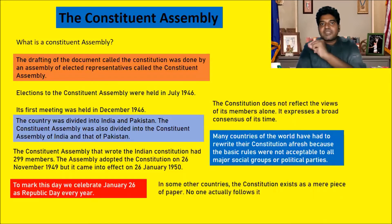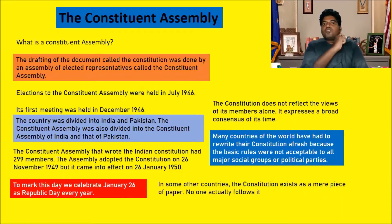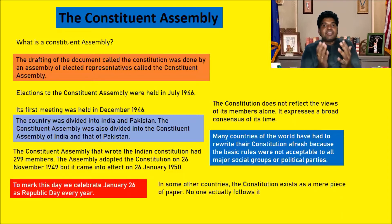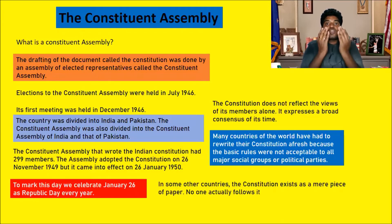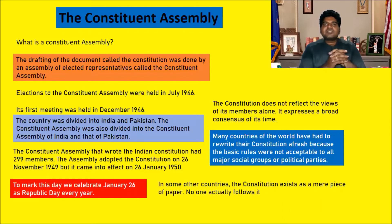The Constitution covers who will form the government, how the government should be formed, and what kind of government has to be formed. All these details are mentioned in a document called the rule book — and that rule book is called the Constitution. So the Constituent Assembly is the elected leaders given the responsibility to draft the rule book of the country, known as the Constitution.